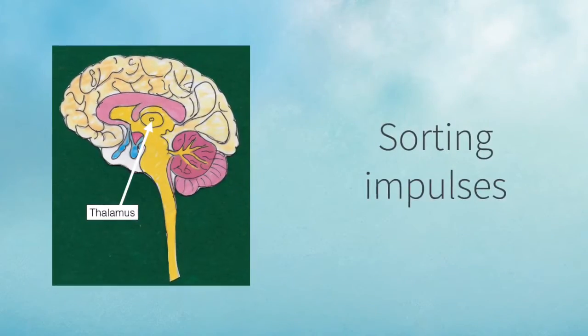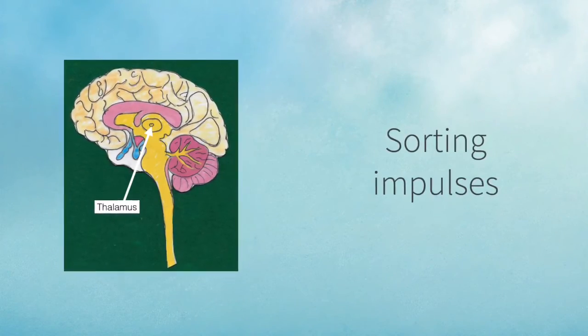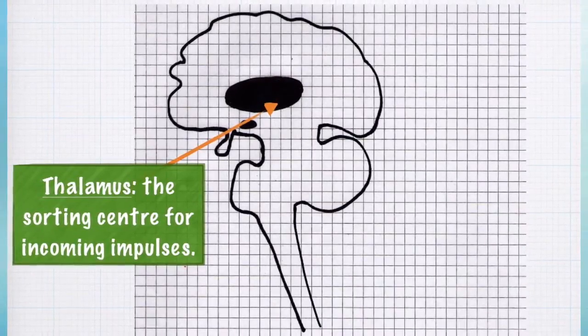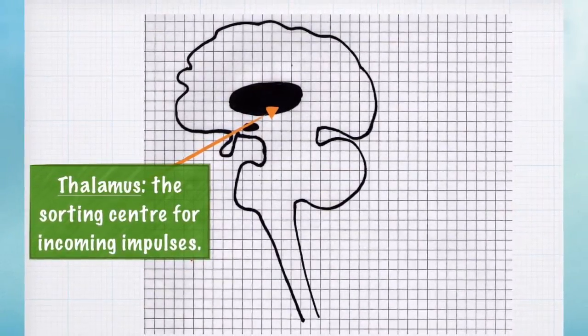Above the hypothalamus is the thalamus, and it's the sorting center for all those impulses that arrive into the brain. So you can see an alternative version of the diagram and where the thalamus would be. It's much bigger than the hypothalamus.